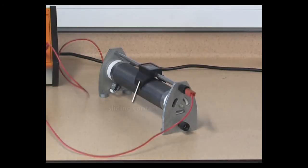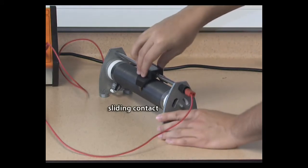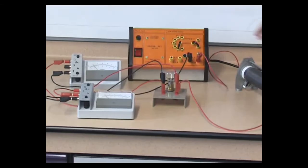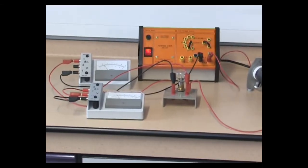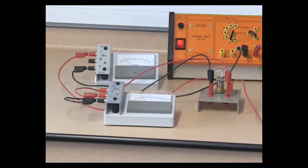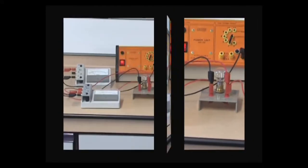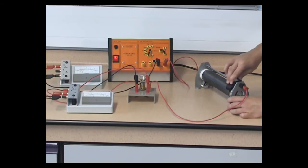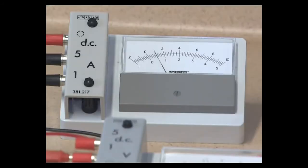Move the sliding contact of the rheostat to the end to maximize its resistance. Switch on the power supply. Record the ammeter and voltmeter readings. Adjust the output voltage of the power pack and the sliding contact of the rheostat to vary the current flowing through the bulb. Take a few sets of data.